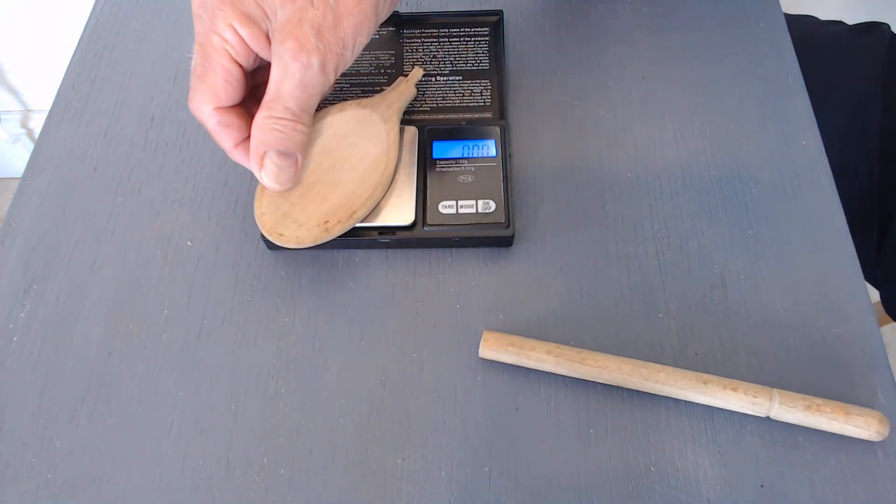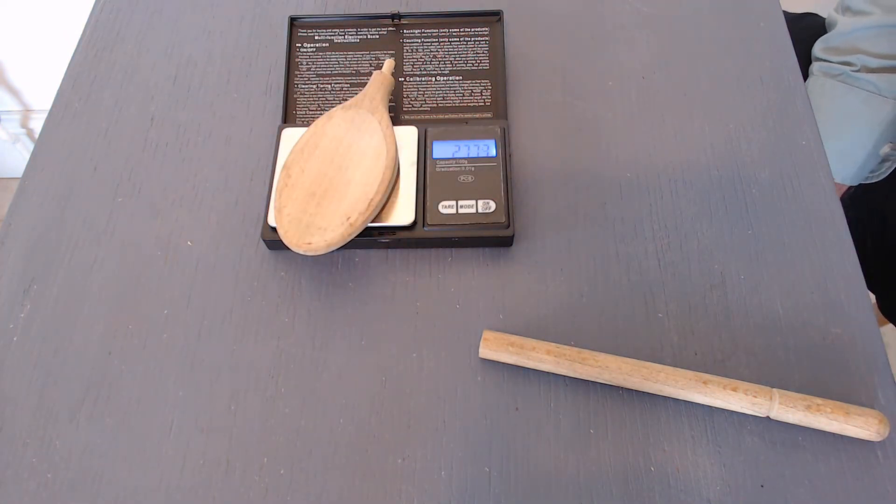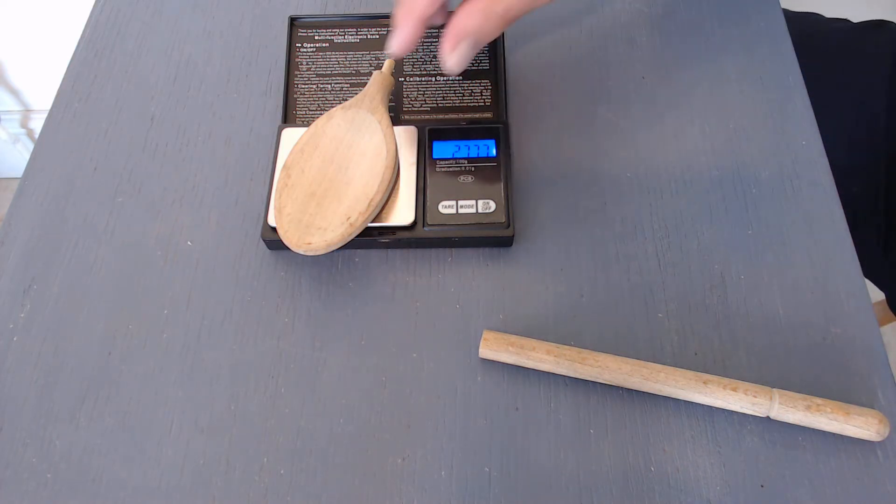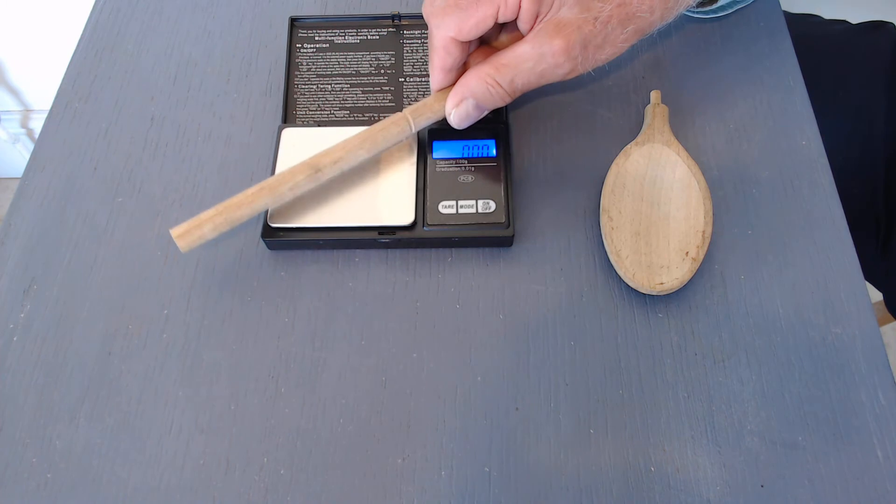So let's put the bowl of the spoon on the scales, and we have a reading of 27.8 grams. So the other side should also be 27.8 grams.